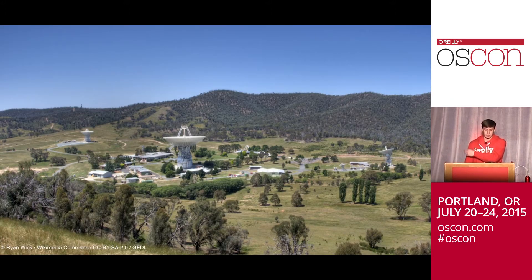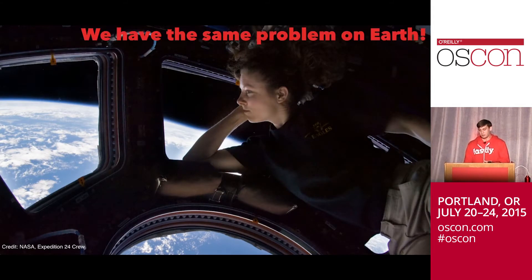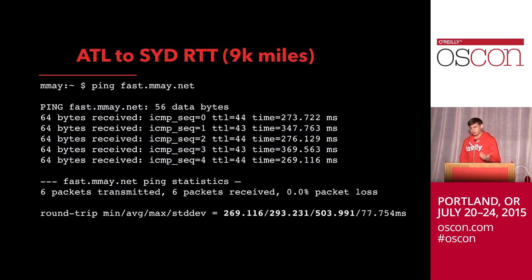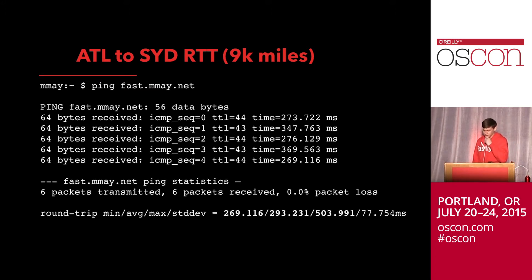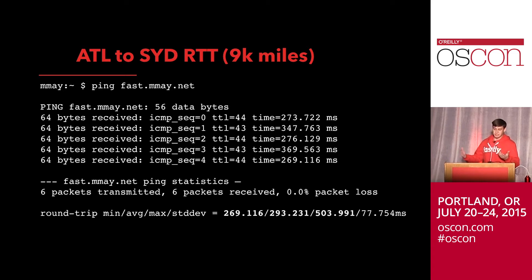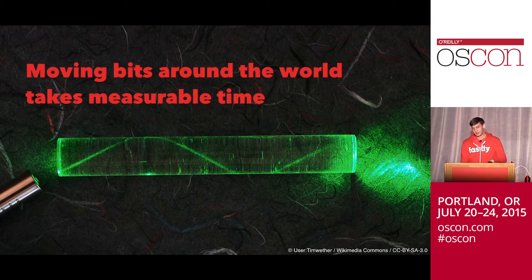This is just one of NASA's deep space network sites — they use huge antennas to communicate with satellites. It's a contrived and extreme example, but we have the same problem on Earth. It takes measurable time to move data around the world. For example, if you're going to do a ping from Atlanta to clients in Sydney, that round trip latency takes upwards of 250 to 350 milliseconds. When you start thinking about opening new TCP connections every time you're sending data to clients that far away, just to initialize a new TCP connection that's taking upwards of a second. As web developers, we really need to consider this.